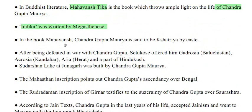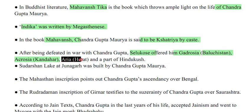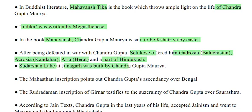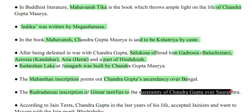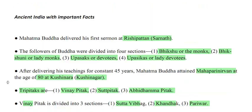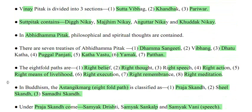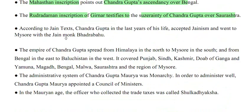Indika was written by Megasthanes. In the book Mahavans, Chandragupta Maurya is said to be Kshatri by caste. After being defeated in war, Seleucus offered Chandragupta Gadroshya (Baluchistan), Akroshya (Kandhar), Arya (Herat) and part of Hindukush. Sudarshan Lake at Junagad was built by Chandragupta Maurya. The Mahasthan inscription points to Chandragupta's ascendancy over Bengal. According to Jain text, Chandragupta in his last years accepted Jainism and went to Mysore with the Jain monk Bhadra Baho.